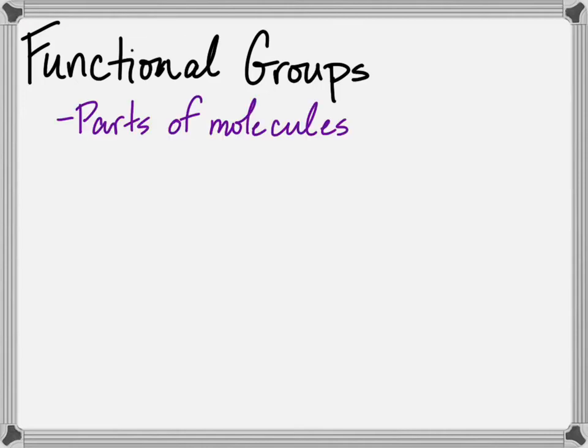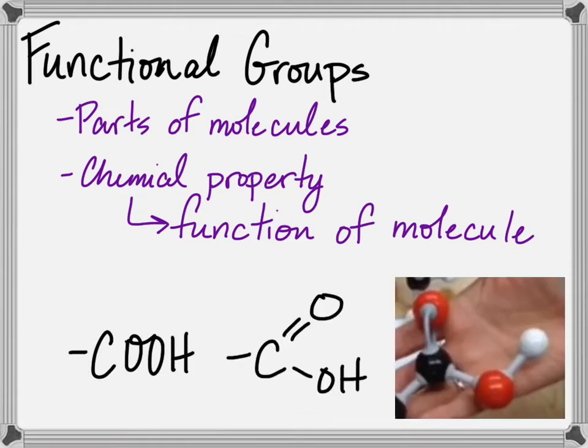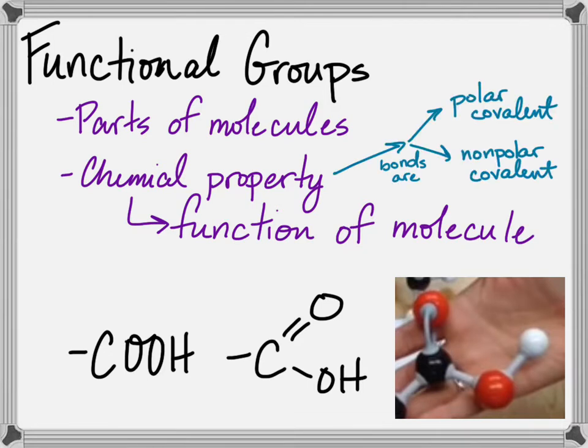Functional groups are parts of molecules with different chemical properties that will change the function of the overall molecule. We can look at them as a formula, drawn out structurally, or visualized as a molecular model or space-filling model. No matter how you look at them, their behavior remains the same and it's based on whether their bonds are polar covalent or non-polar covalent.